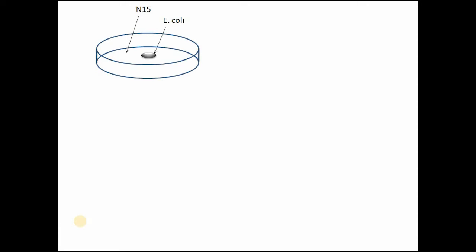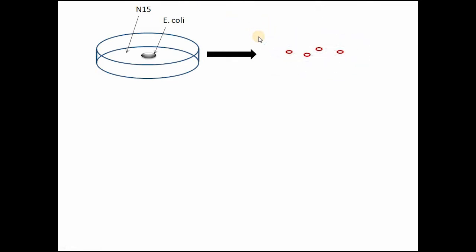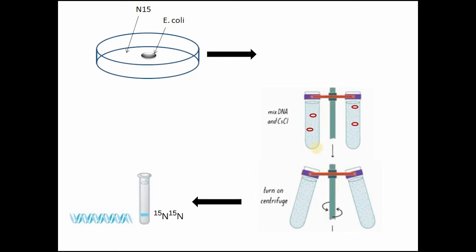The bacteria were grown in a culture medium containing heavy isotope N-15. After many generations, the bacteria incorporated N-15 into their DNA. Meselson and Stahl then extracted DNA from the bacteria and added it to a cesium chloride solution — a heavy salt solution — and placed it in a centrifuge. After centrifugation, they observed that the heavy N-15 DNA settled at the bottom of the test tube.